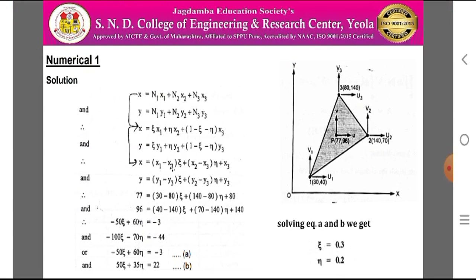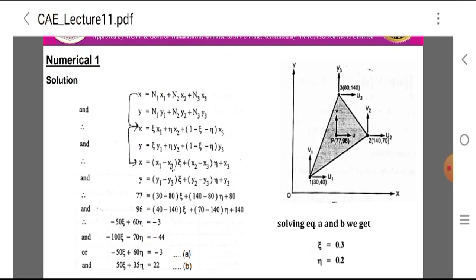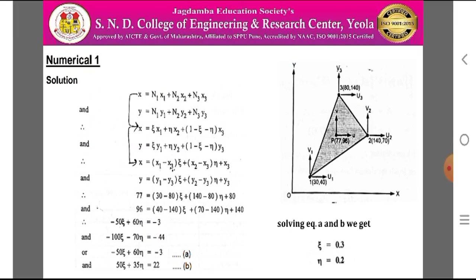To obtain the shape functions, we use x = N1·x1 + N2·x2 + N3·x3 and y = N1·y1 + N2·y2 + N3·y3. Substituting N1 = epsilon, N2 = neta, N3 = 1 − epsilon − neta, we get: x = (x1 − x3)·epsilon + (x2 − x3)·neta + x3, and y = (y1 − y3)·epsilon + (y2 − y3)·neta + y3.